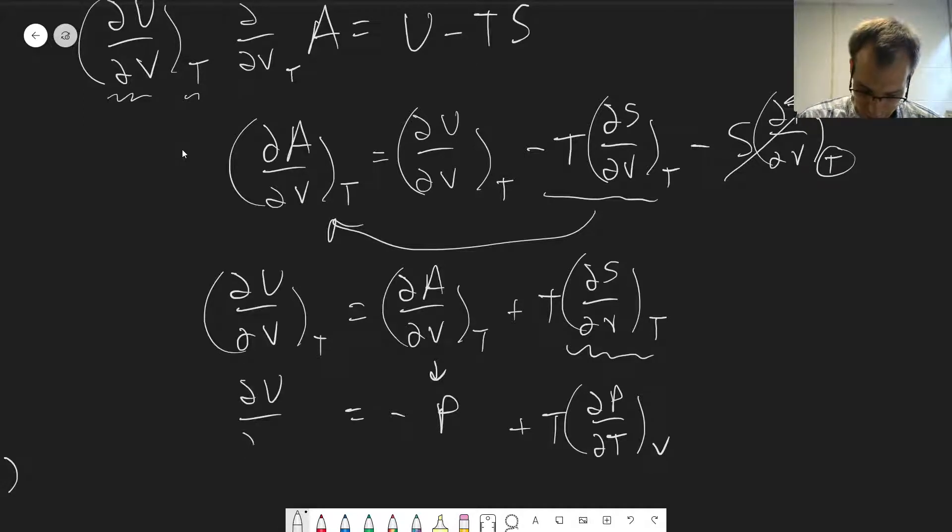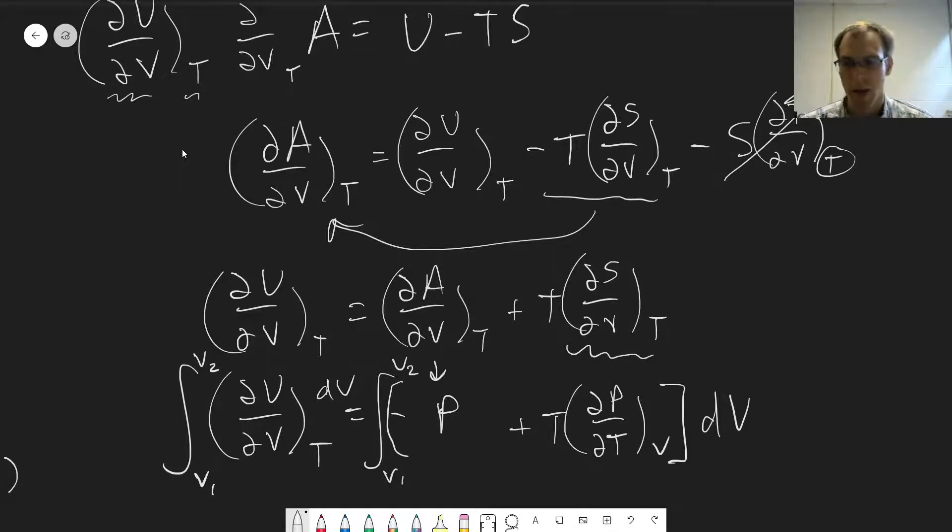So now we have how the internal energy changes with respect to volume at constant temperature. We have a relationship here. So if we want to find this out, we would need to integrate from V1 to V2, and we would have to integrate this whole expression.